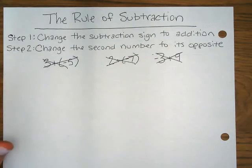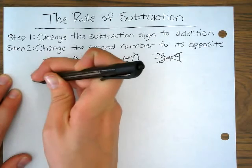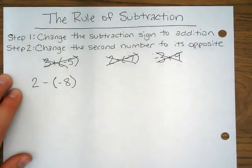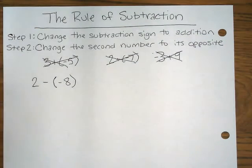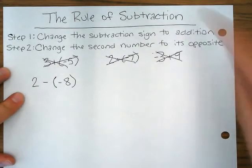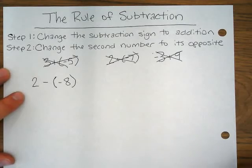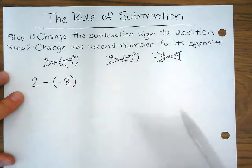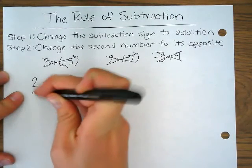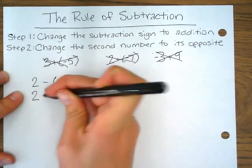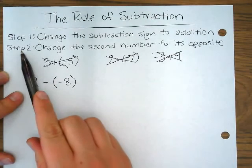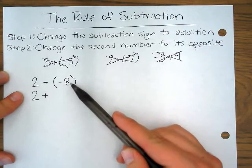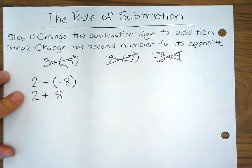Let's go ahead and do a couple examples of the rule of subtraction. Let's say we had a problem such as two minus negative eight. We could solve this problem using a number line, or maybe you can visualize that in your head, but if we're going to be using the rule of subtraction we can change it to an addition problem that is easier to solve. So step one is change the subtraction sign to addition. I'm going to keep my first number the same. Instead of subtraction we're going to be doing addition. And then step two says change the second number to its opposite. The opposite of negative eight is positive eight, so I'm going to write that right there.